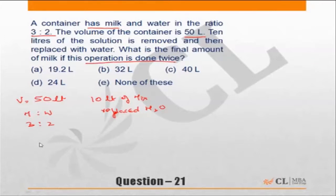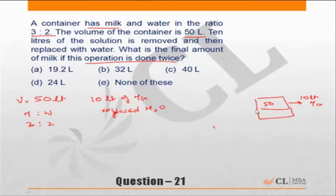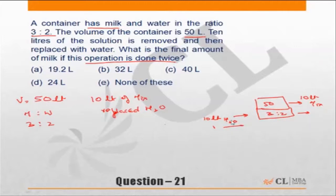Out of the 50 liters, you remove 10 liters of the mixture. This mixture is originally 3 to 2 for milk and water. Once you remove 10 liters of milk and water, you add 10 liters of water. Then you remove another 10 liters of mixture and add another 10 liters of water. The question is: what is the amount of milk if this operation is done twice?